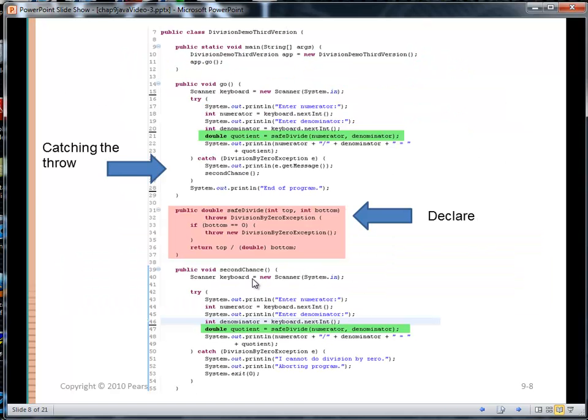So let's go back and look at that example I showed earlier. In Division Demo 3rd Version, the main program created an instance of Demo 3rd Version, and then called Go on that instance. Go, in turn, asked for a numerator and denominator, and called Safe Divide. Now, Safe Divide has announced that it throws Division by Zero exception. So Go, as the caller, has put that call inside of a try-catch block, and it's prepared to catch Division by Zero exception. So it's not passing the buck, it's dealing with it.